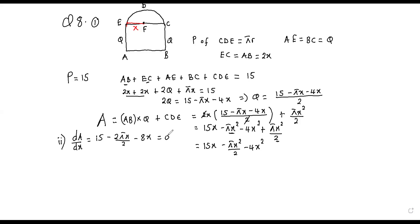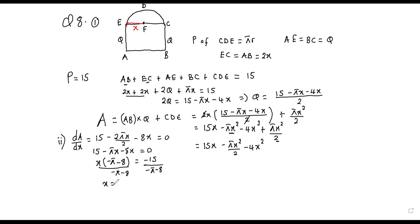So we get 15 − πx − 8x = 0. We are looking for x, so we factor out x to get x(−π − 8) = −15, and we divide by negative (π + 8). So we have x = 15 / (π + 8).